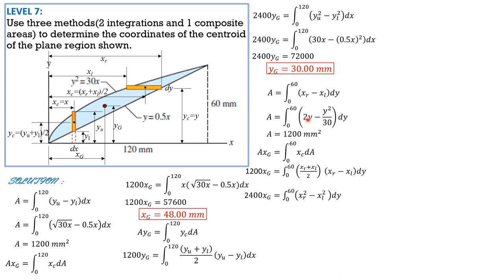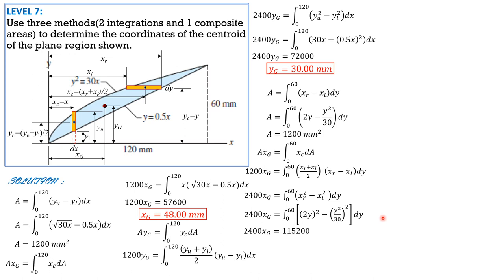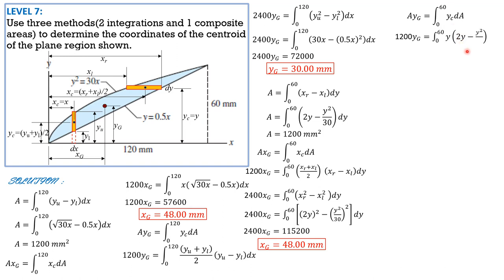So 2,400 x_G equals the integral from 0 to 60 of (2y)² minus (y²/30)² DY. Using the calculator, the value of the right side is 115,200, so x_G equals 48 mm. Similarly, area times y_G equals the integral of y sub c dA where y sub c is just y. So 1,200 y_G equals the integral from 0 to 60 of y(2y minus y²/30) DY. The value of the right side is 36,000, so y_G equals 30 mm. That's it for these two integrations.